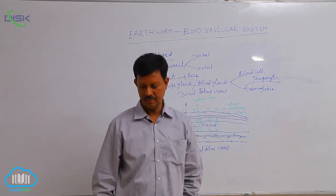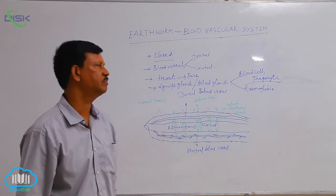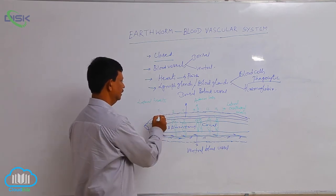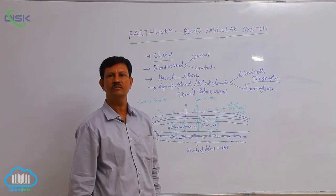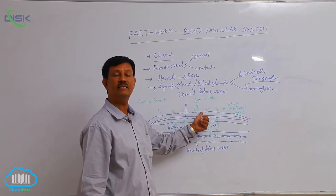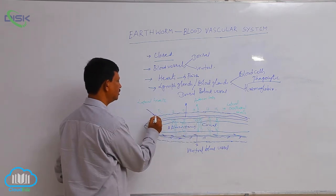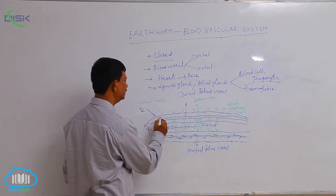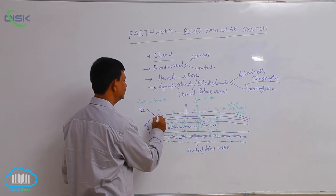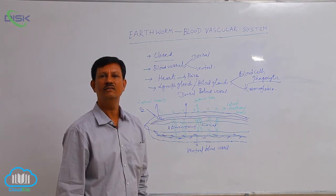Respiratory organs are absent in earthworm; respiration takes place through the body surface. The earthworm's body wall is always moist due to the presence of mucus substance secreted by epidermal cells. This mucus substance absorbs oxygen from the atmosphere, and carbon dioxide present inside the body is sent out. This mutual exchange of gases takes place through the body wall by simple diffusion.